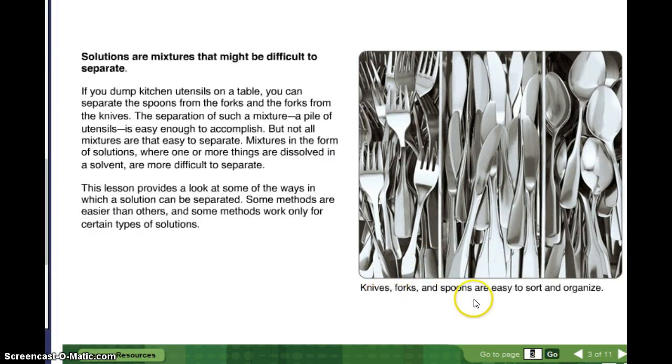Let's look at the picture. Knives, forks, and spoons are easy to sort and organize. Solutions are mixtures that might be difficult to separate. If you dump kitchen utensils on a table, you can separate the spoons from the forks and the forks from the knives. The separation of such a mixture, a pile of utensils, is easy enough to accomplish. But not all mixtures are that easy to separate. Mixtures in the form of solutions, where one or more things are dissolved in a solvent, are more difficult to separate. This lesson provides a look at some of the ways in which a solution can be separated. Some methods are easier than others, and some methods work only for certain types of solutions.